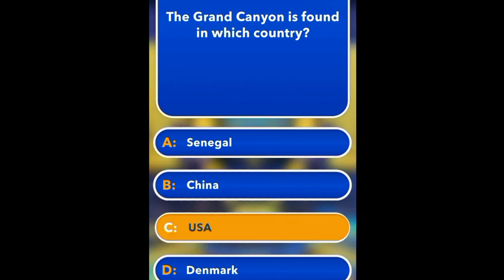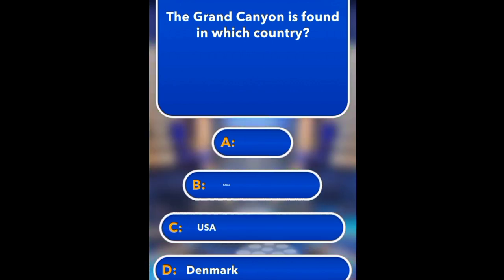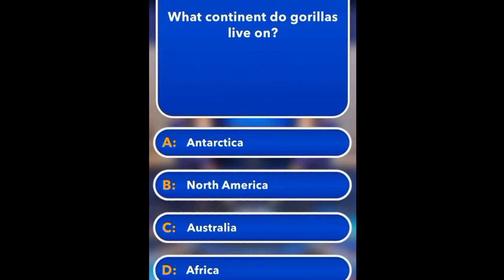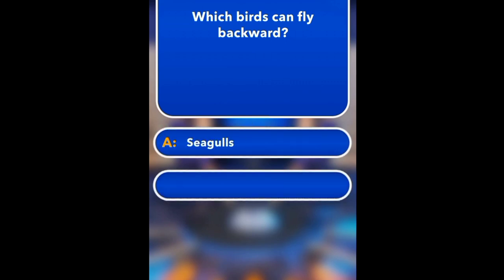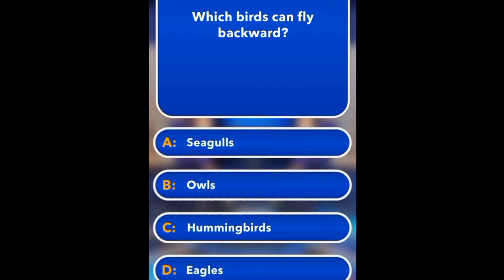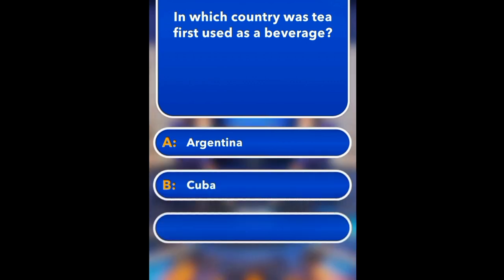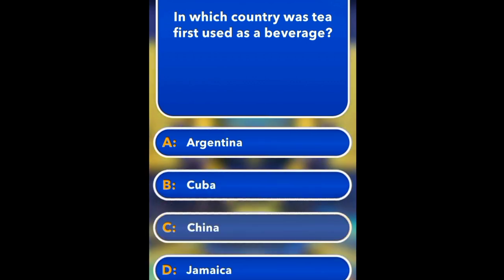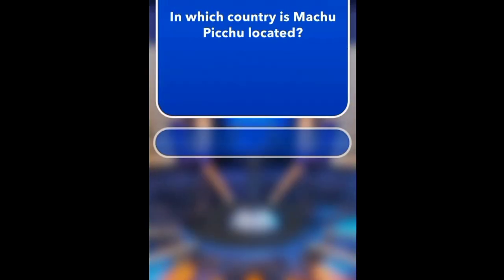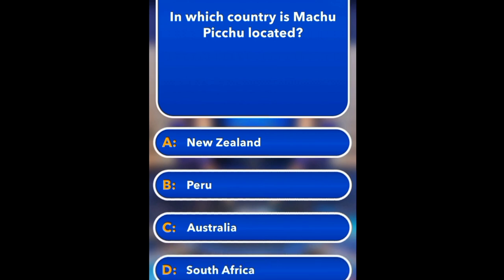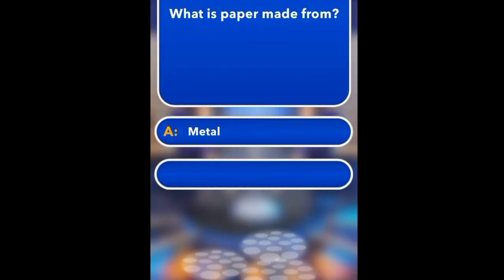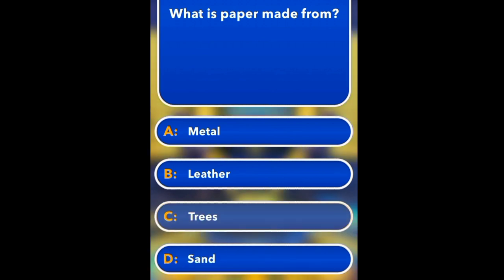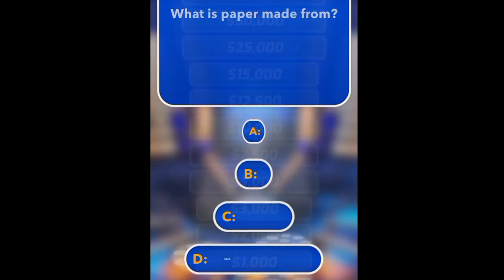What is a dog's most powerful sensory organ? Tongue, nose, eyes, ears. Nose. In which game might a person have a full house? Poker, football, chess, table tennis. Poker.